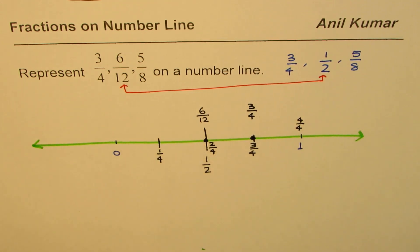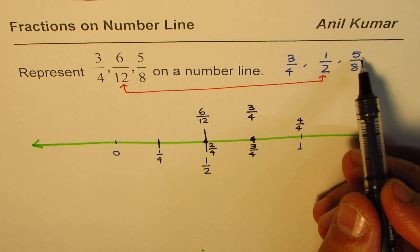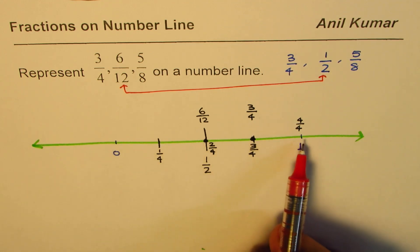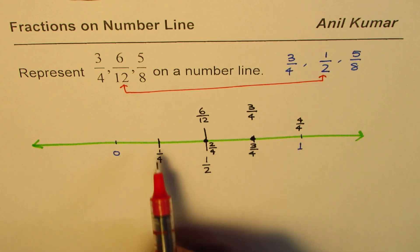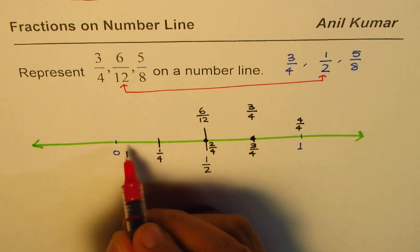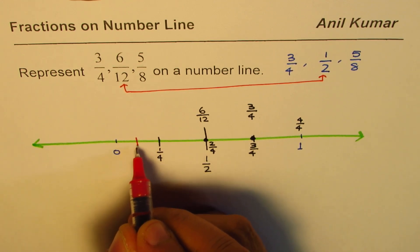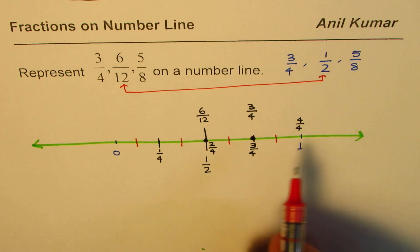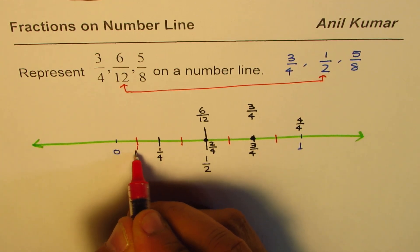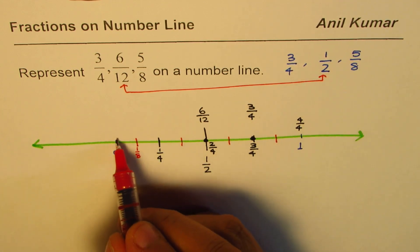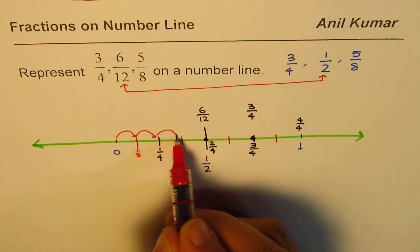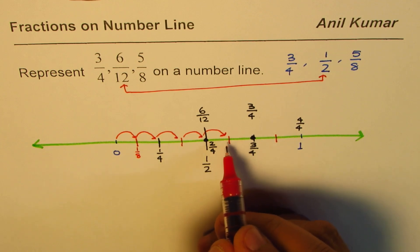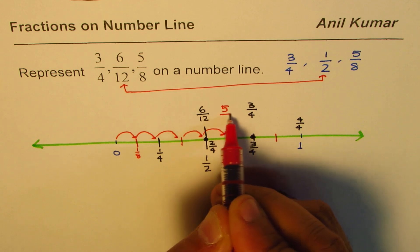Now the question is how to represent 5/8. One way is to divide 1 into 8 equal parts — that means halving each of the 4 equal parts. Half of this, half of this, half of this, half of this, and half of this — those are your eighths. Now count 5 of them: 1, 2, 3, 4, and 5. So this point here is 5/8.